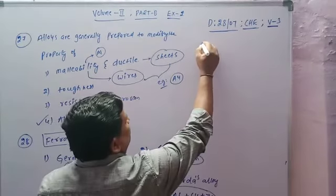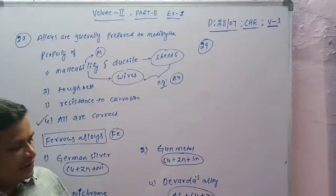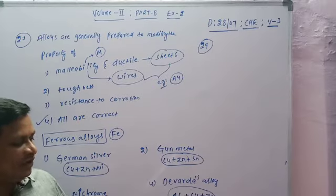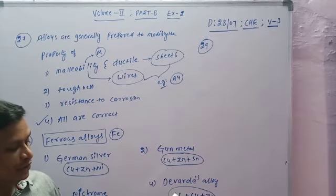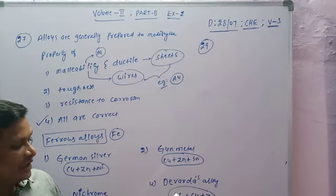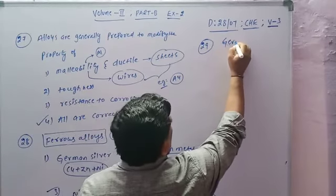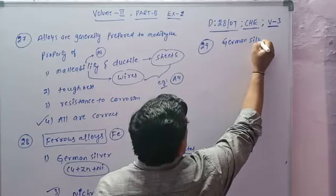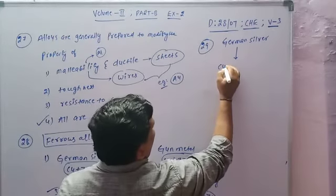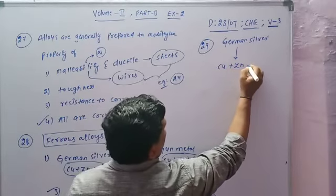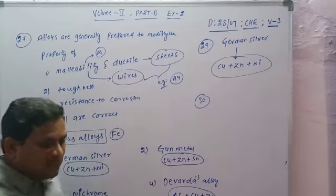Bit number 29: German silver contains which of the following metals? This appeared in the previous engineering exam of 2016. German silver is the composition of copper + zinc + nickel.